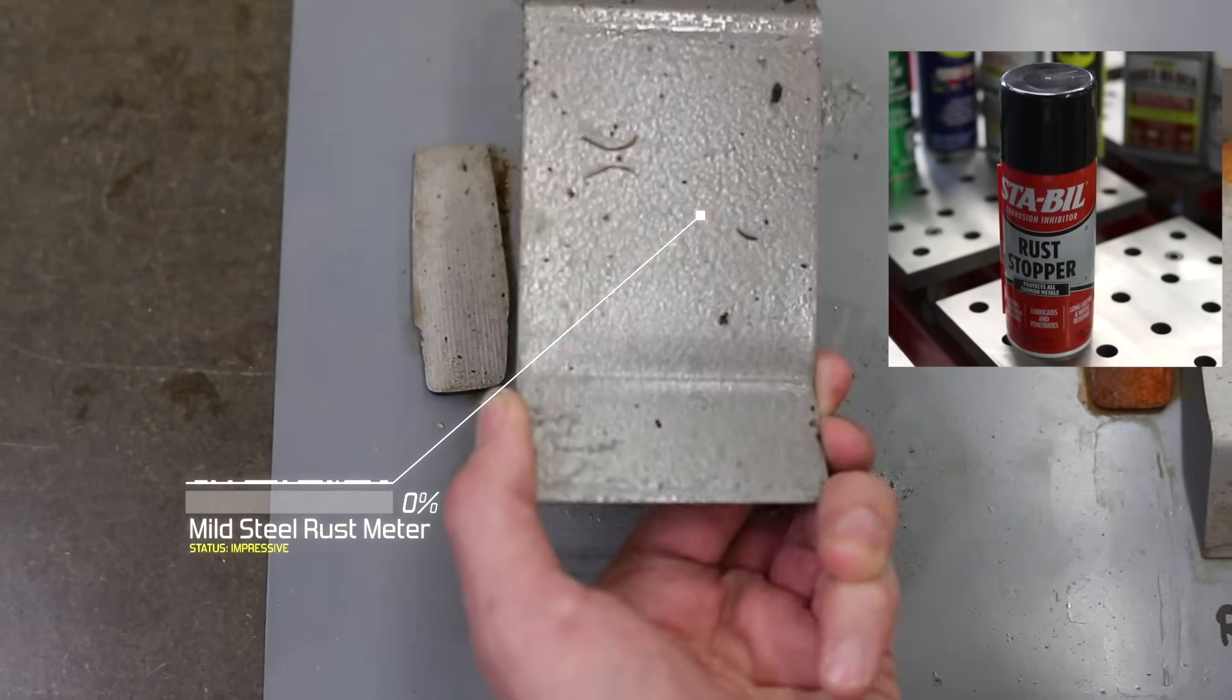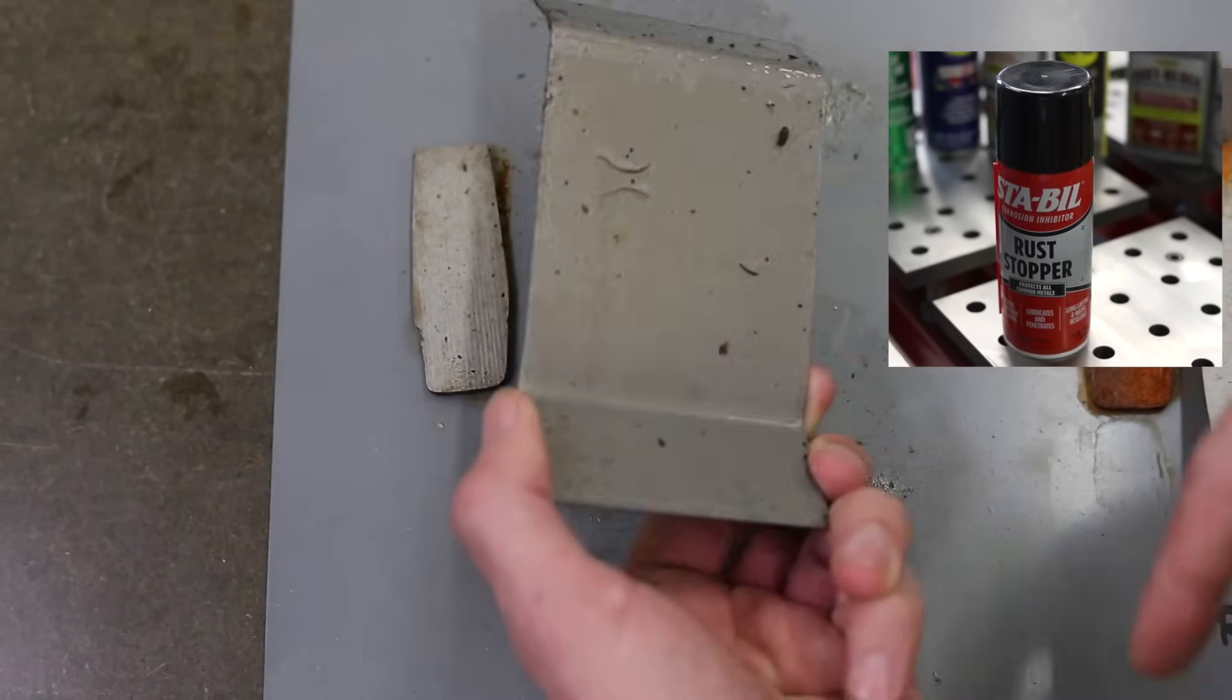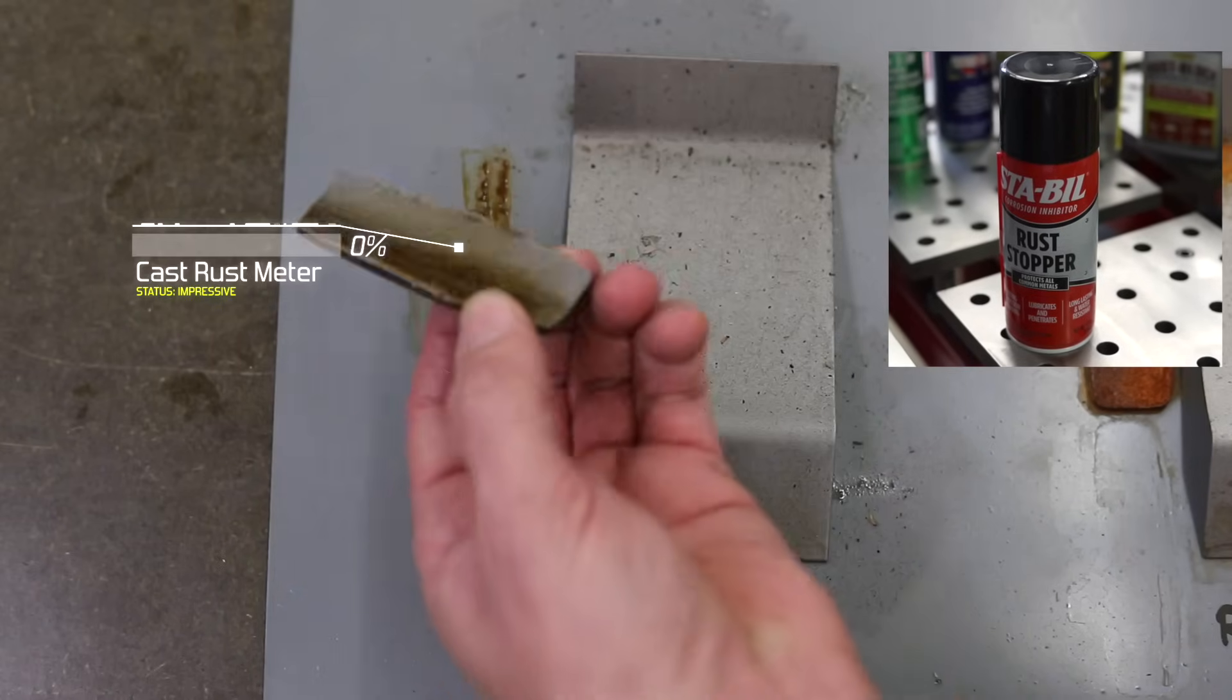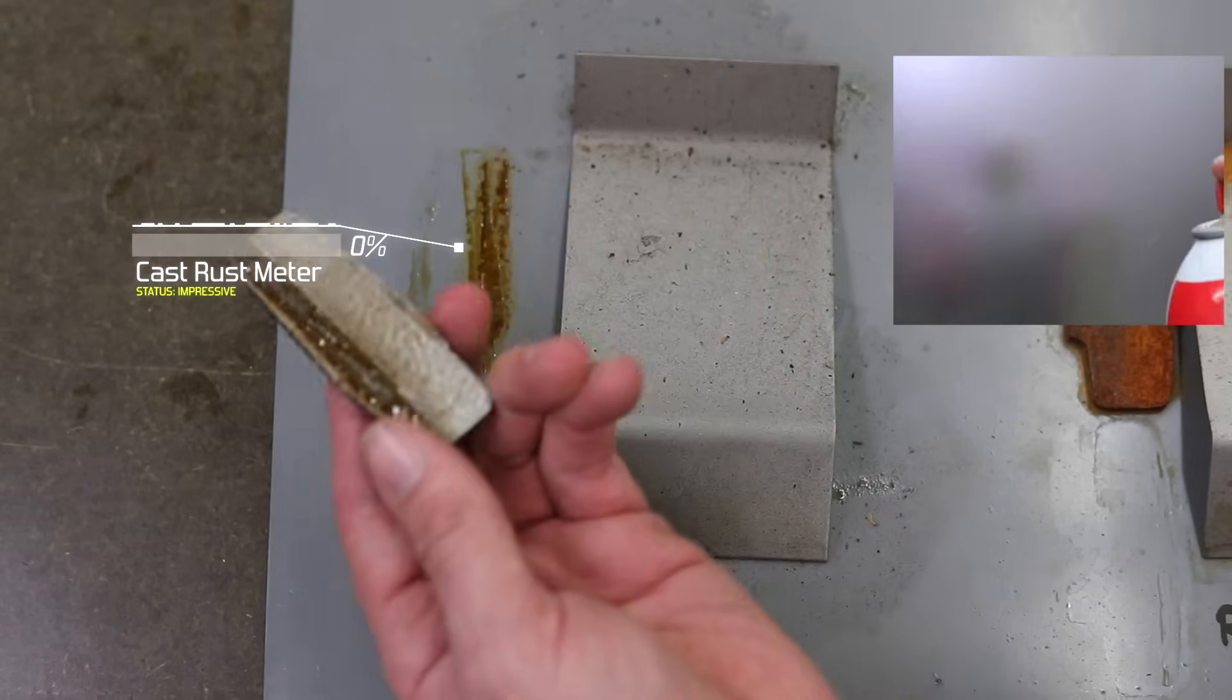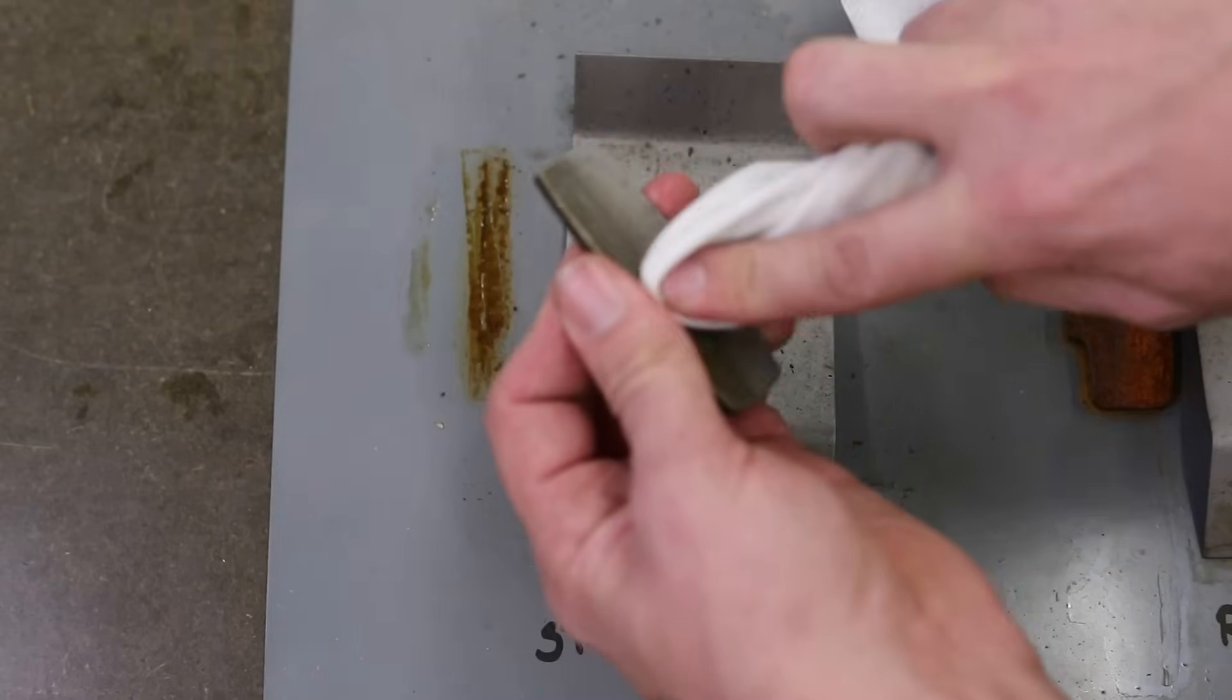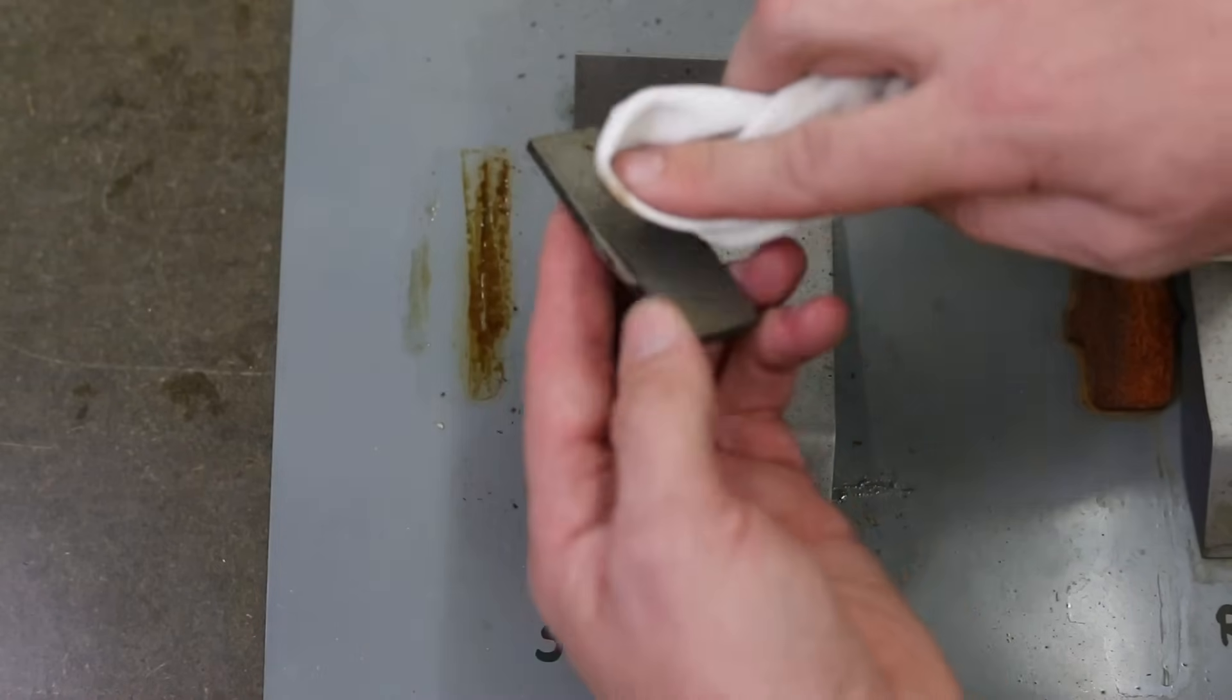Last up, stable rust stopper. By far the best looking test coupon of all of them. The cast iron performed excellent. Left a little bit of residue, but it clearly wipes off fairly easily on the cast iron. Overall, this is my favorite on the ease of application and performance.